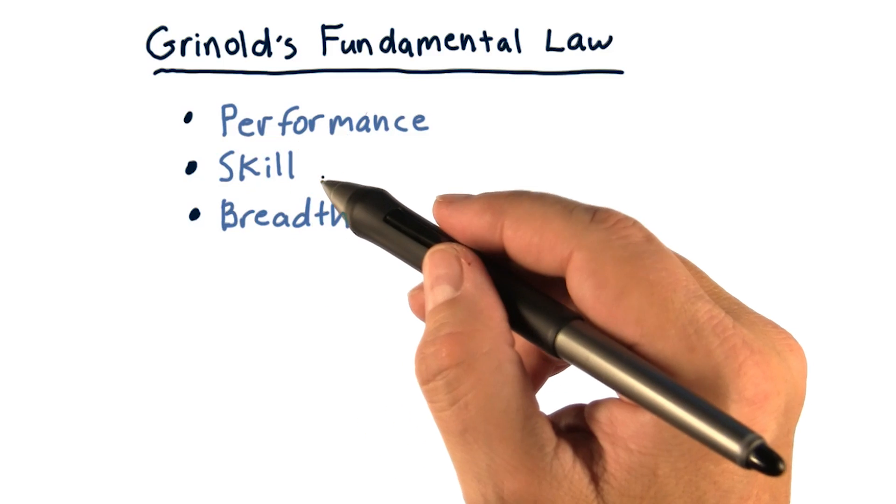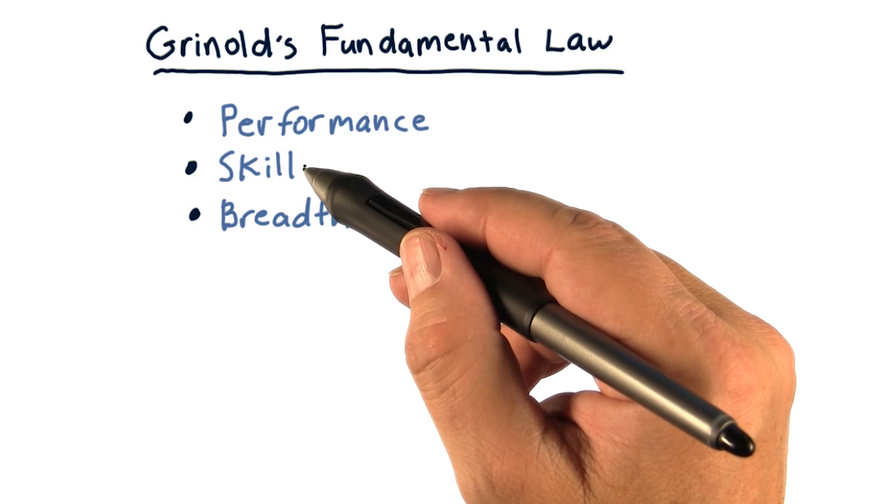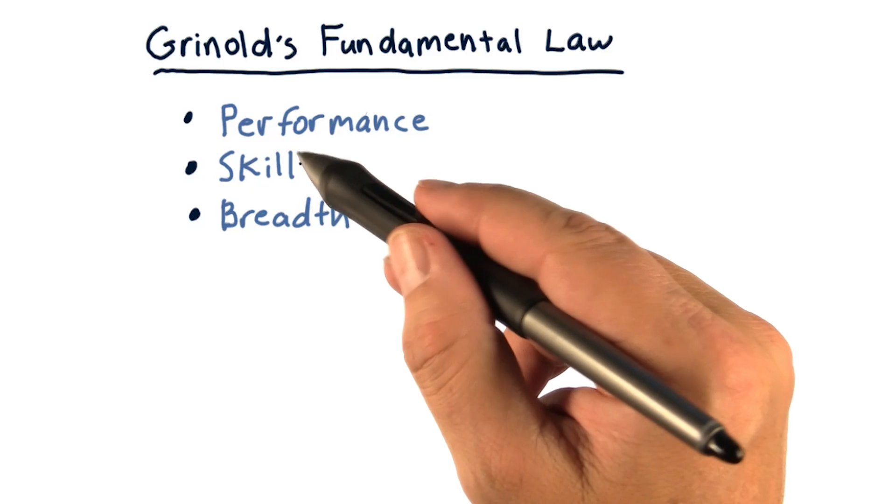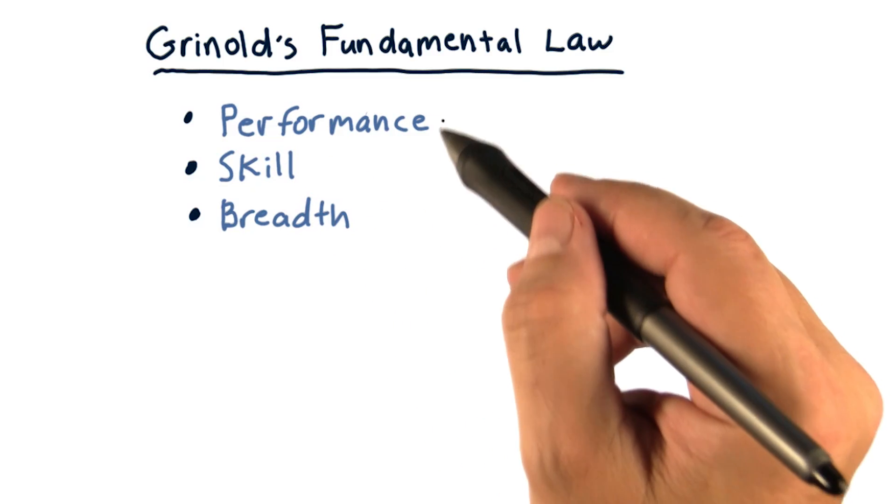Grinold felt that there must be some equation whereby we could combine skill and breadth to create an estimate of performance.